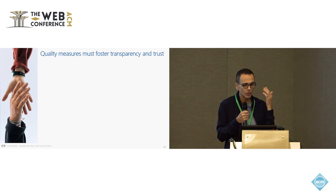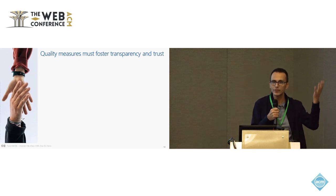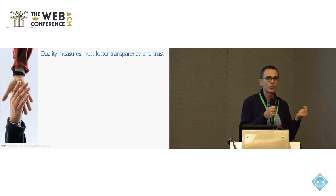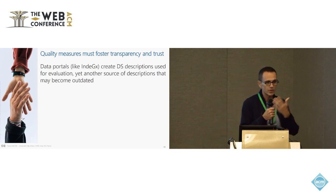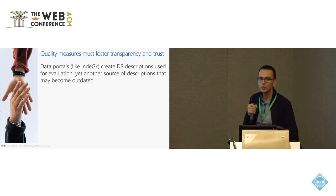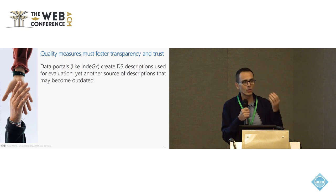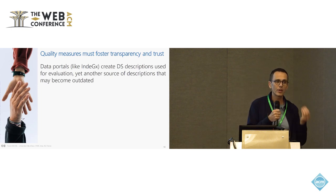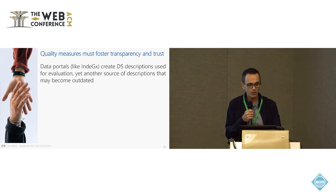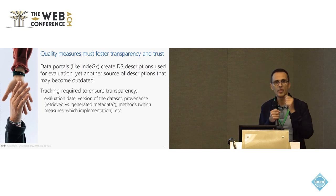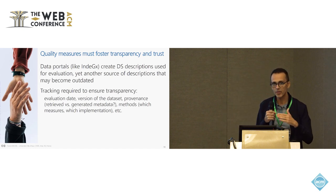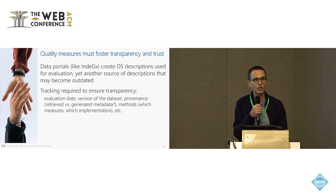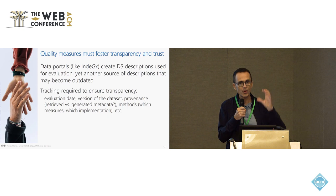For quality measures to be trusted and used, they need to be transparent. Data portals like GINDEX create dataset descriptions that eventually become outdated. So you need your portal to provide a lot of provenance information and traceability — saying when the dataset evaluation was done, on what data, what metadata was extracted, and what was constructed. This is something we have largely focused on in GINDEX, and all the provenance and traceability data is available as part of the whole index.